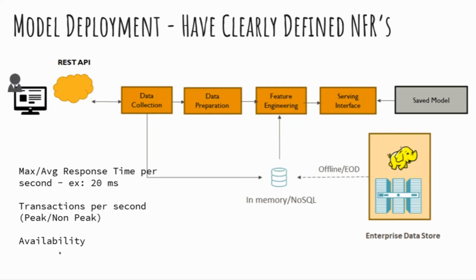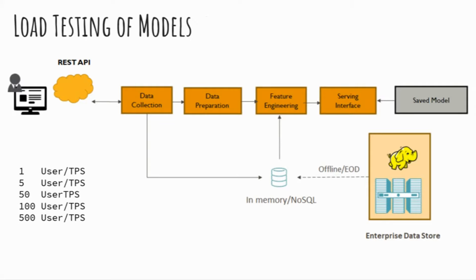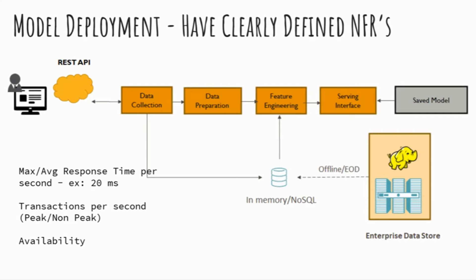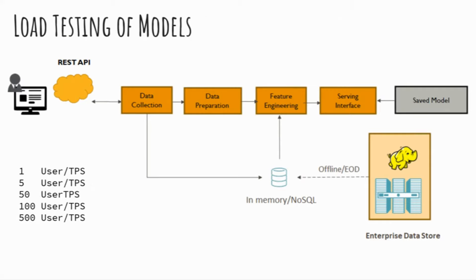The higher the availability you require, the more your infrastructure cost rises exponentially. Up to around 80% you may get a good SLA at reasonable cost, but above that the infrastructure cost becomes very significant. You need to balance the cost your business can afford against the availability of the system. These are the non-functional requirements (NFRs) you need to define before even deploying a model.